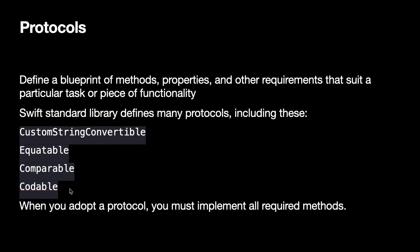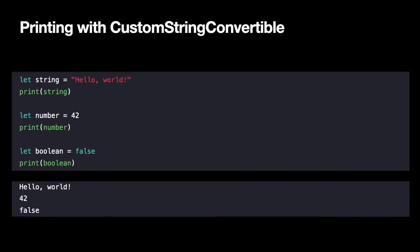When you adopt a protocol, you must implement all the required methods and have all the required properties and any required initializers in order to comply. We've been using protocols all through this course. We've been printing strings, numbers, and booleans. The reason that works is because the print method will print anything that conforms to the CustomStringConvertible protocol.